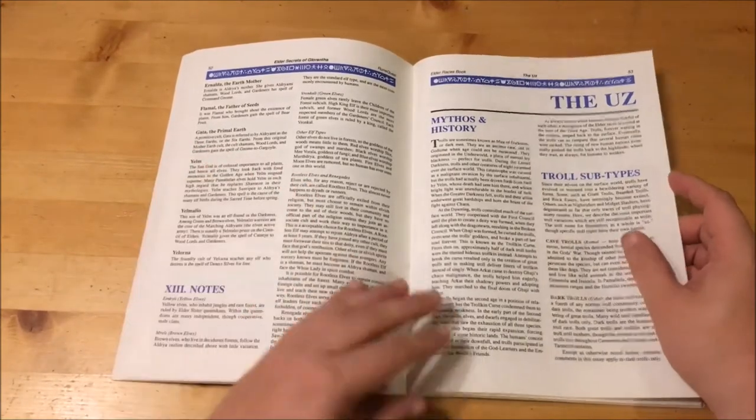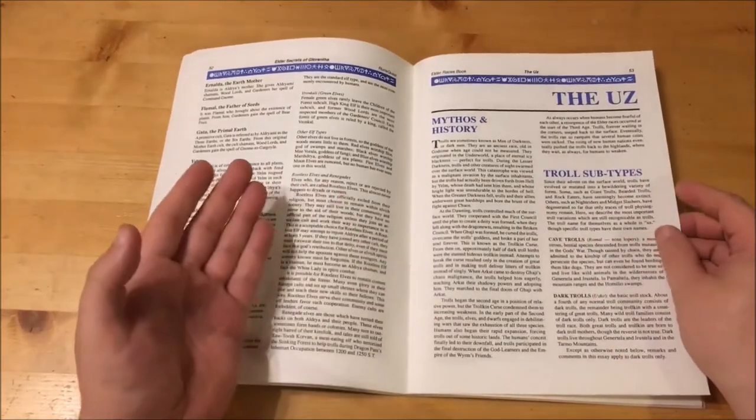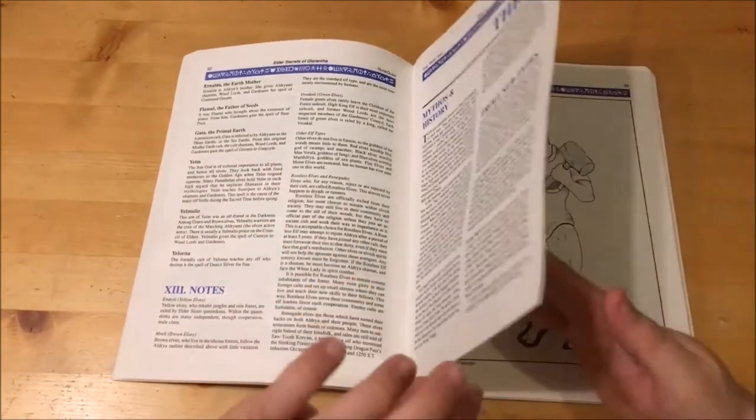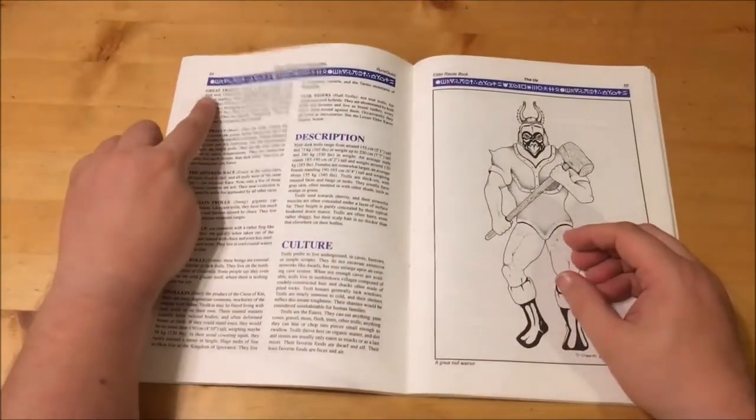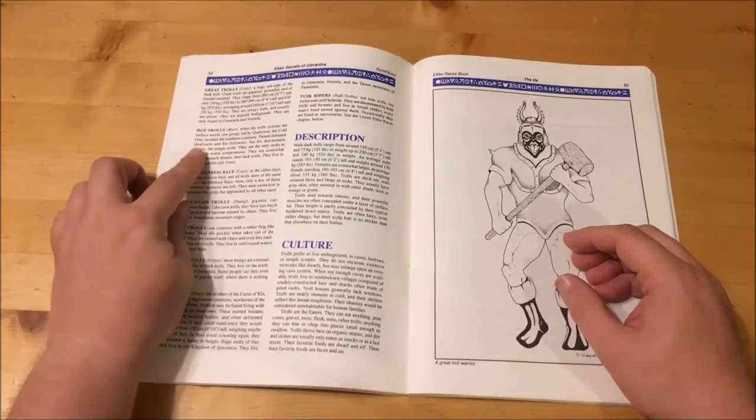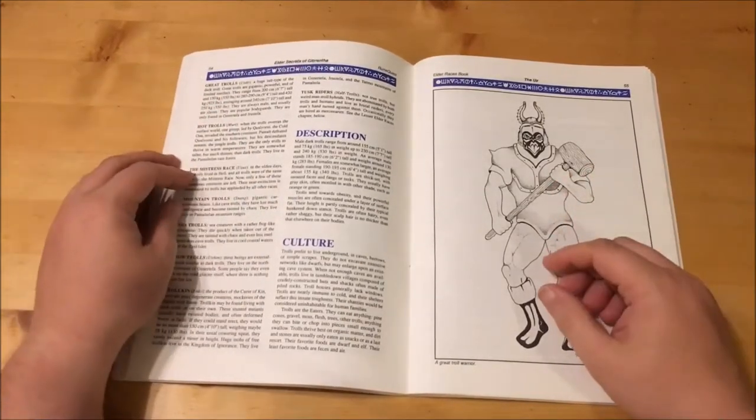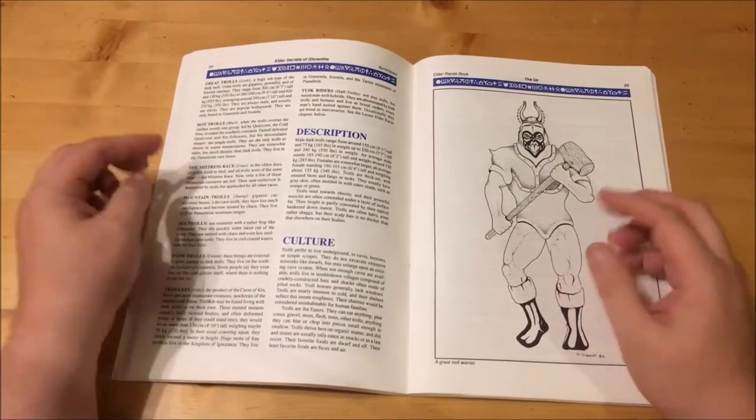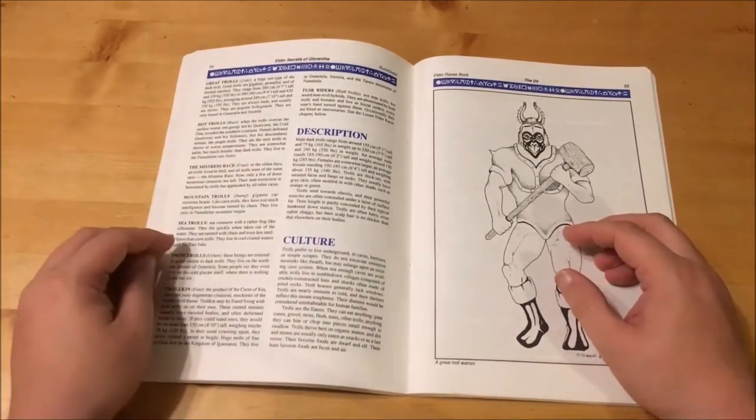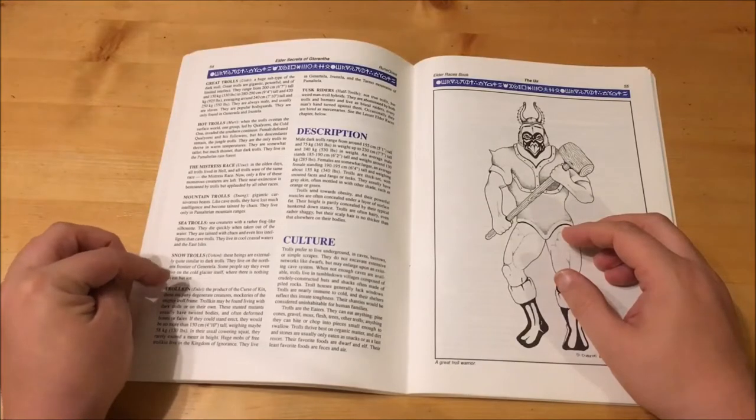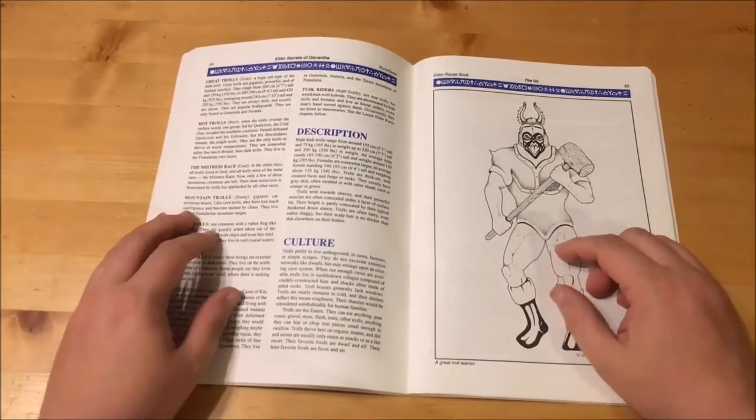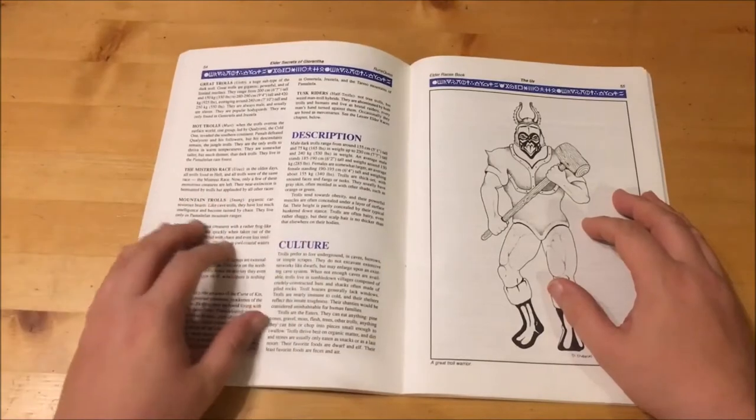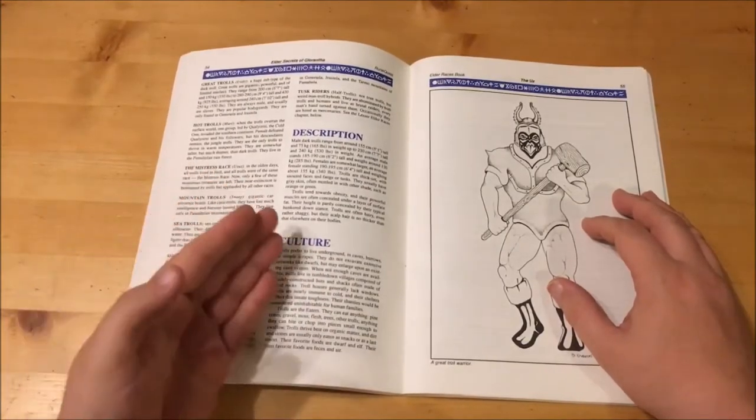There are a number of troll subtypes. Cave Trolls are a monstrous, bestial offshoot that were tainted by chaos during the Gods War. Although despite this, other trolls feel a sense of kinship for them. Dark Trolls are considered the basic troll type. Great Trolls are huge lumbering beasts of limited intellect that are always male. Hot Trolls inhabit the jungles and are taller and thinner than Dark Trolls. The Mistress race are the original Trolls that lived in Hell. Only a few of these creatures are left. Mountain Trolls are gigantic carnivorous beasts that are tainted by chaos. Sea Trolls live solely in the oceans and are frog-like. Snow Trolls are quite similar to Dark Trolls and live in the northern frontine of Genatella. Trollkin are puny degenerate creatures that are often twisted and mutated. Tusk Riders or Half Trolls are a weird troll-human hybrid that are shunned by both trolls and humans who have a brutal society and are often hired as mercenaries.